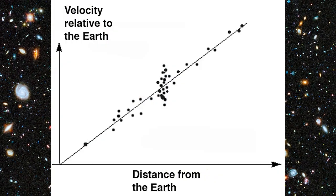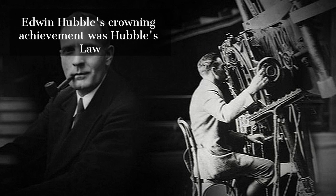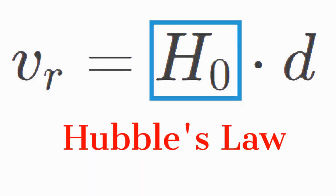By plotting recessional velocities of objects against their distances from us, Edwin Hubble came up with Hubble's law. Recessional velocity is equal to Hubble's constant multiplied by the distance to the object.